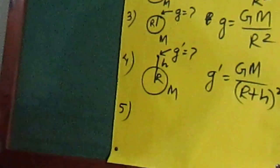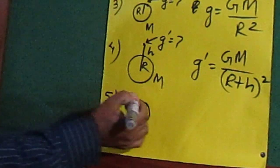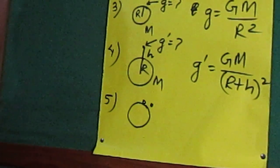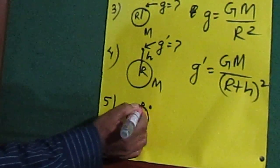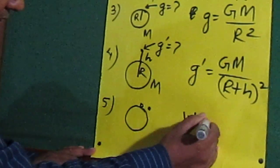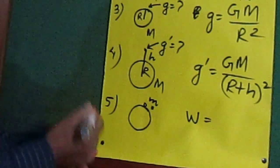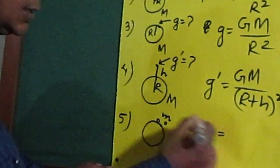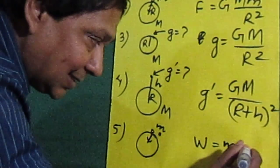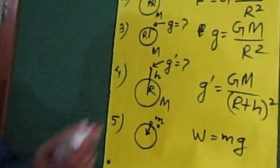The fifth equation: if a body is on the surface or near to the surface of a heavenly body, and we have to calculate its weight at that place, then weight equals mass of the body times acceleration due to gravity, that is W equals m times g. Acceleration due to gravity has the direction towards the center of the Earth — it is a vector quantity.